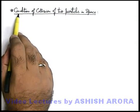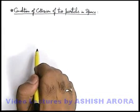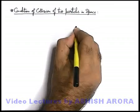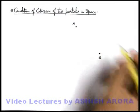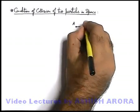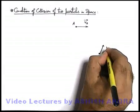Now we are going to discuss a particular condition of collision of two particles in space. Let us consider two particles, say one particle is A and the other is B. They are moving, say A is moving with a velocity v_a vector and B is moving with a velocity v_b vector.